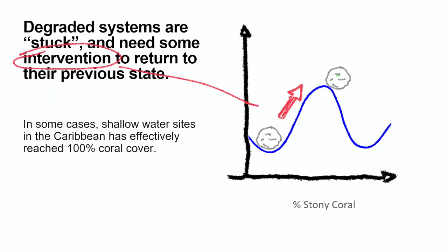In that conceptualization, our intervention is really the attempt to push the system back up over the hill. There are forces keeping it in that degraded state, and if we put in enough effort, we can push it back over the hump. We have, in fact, been successfully pushing systems back over the hump, as the videos showed.